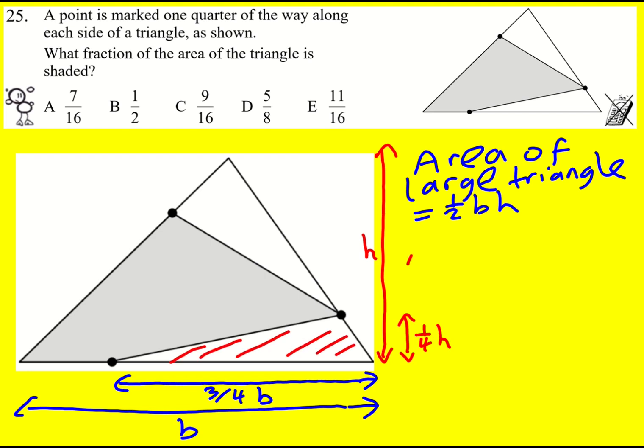But the area of the red triangle is going to equal a half times three quarters times the base times one quarter times the height. And actually that is going to be three over sixteen times the height. I'm going to leave that in there because that is my original triangle.